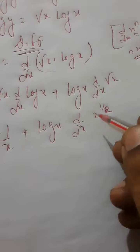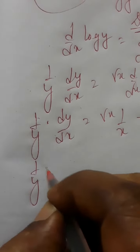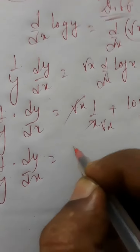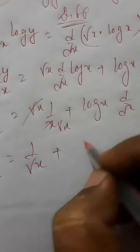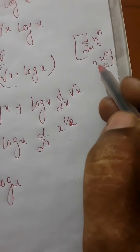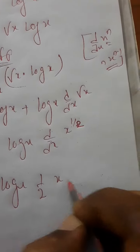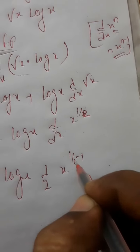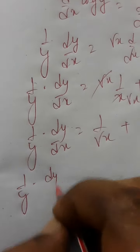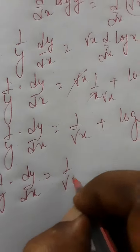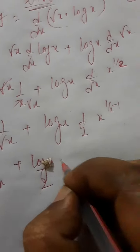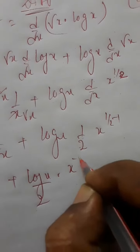Applying this formula, root x times 1 by x gives 1 upon root x. For d by dx of root x, applying the power rule with n equal to half gives half into x to the power of half minus 1, which is half into x to the power of minus half.